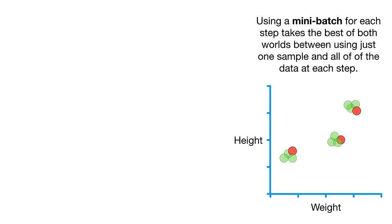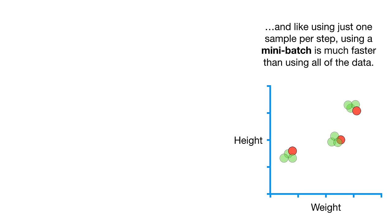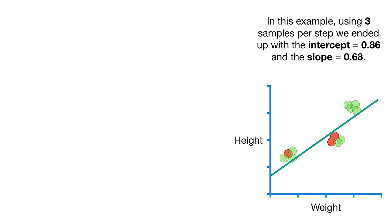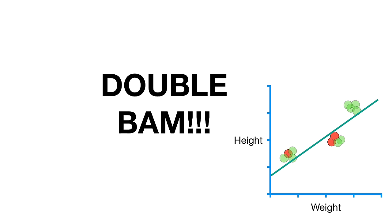Using a mini-batch for each step takes the best of both worlds between using just one sample and all of the data at each step. Similar to using all of the data, using a mini-batch can result in more stable estimates for the parameters in fewer steps. And like using just one sample per step, using a mini-batch is much faster than using all of the data. In this example, using three samples per step, we ended up with an intercept equals 0.86 and the slope equals 0.68. Which means that the estimate for the intercept was just a little closer to the gold standard, 0.87, than when we used one sample and got 0.85. Double BAM!